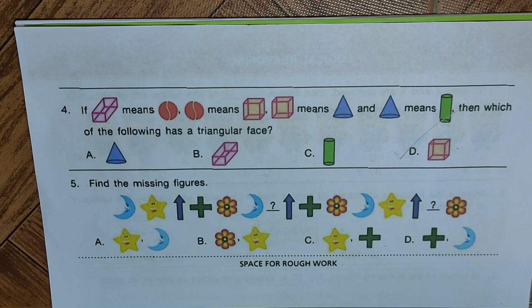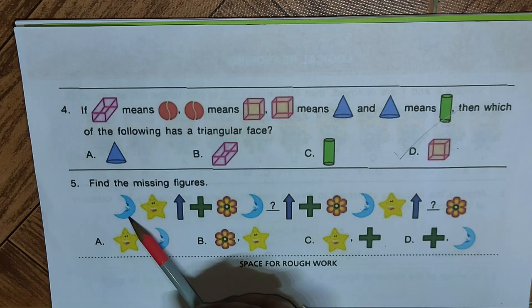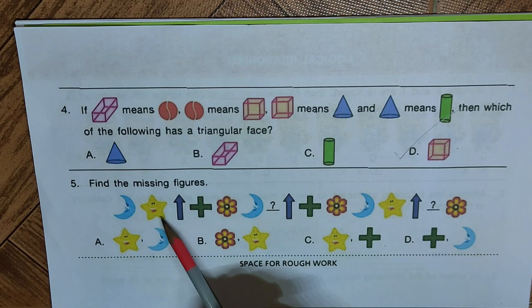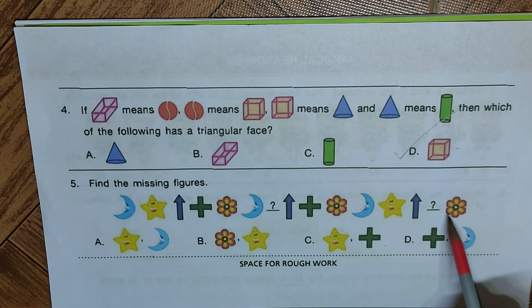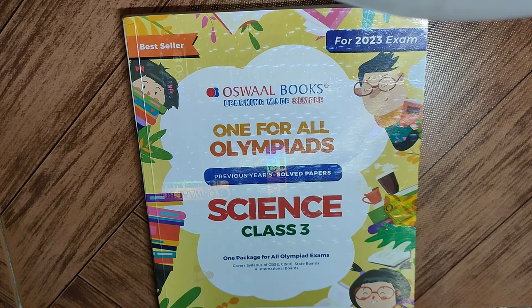Question five: find the missing figure. Following the pattern — after the moon we have a star, so after this moon in place of the question mark we place a star. Similarly, after the upper arrow there is always a green plus sign, so that position is replaced by a green plus sign. Among options A, B, C, D, option C has both the star and the plus sign, so C is the answer.